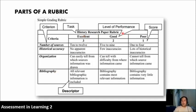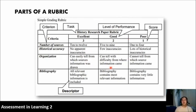We also discussed the parts of a rubric. A rubric has the task name, and on the side are the criteria — the things you need to see for this particular performance or product. You have the level of performance or quality, and below it the score or rating. The descriptions are also known as performance indicators or simply as descriptors. A rubric has all of these parts.